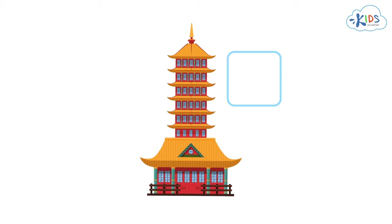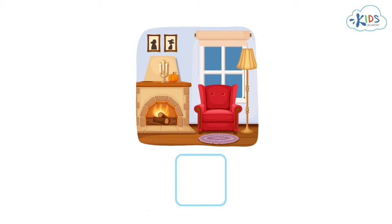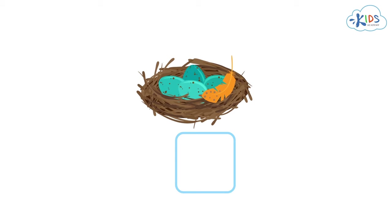The first picture is a house in China. Is this a home? Yes! People in China might live here. Good work! Take a look at the next picture — it looks like a nice cozy living room with a fireplace. Do you think that someone lives here? You're right! A living room is a part of a home.